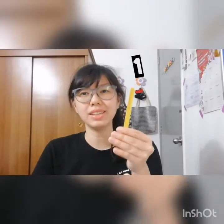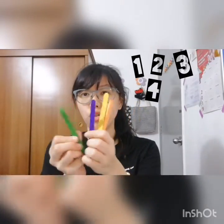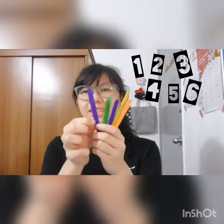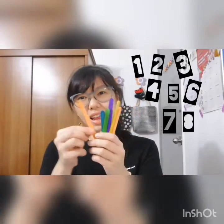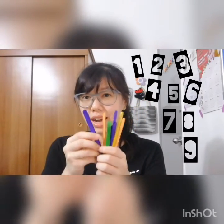We're going to begin by counting some popsicle sticks. Can you come with me? Let's go! 1, 2, 3, 4, 5, 6, 7, 8, 9.